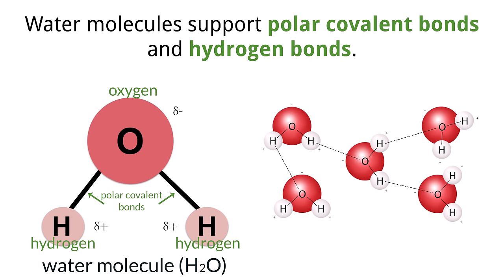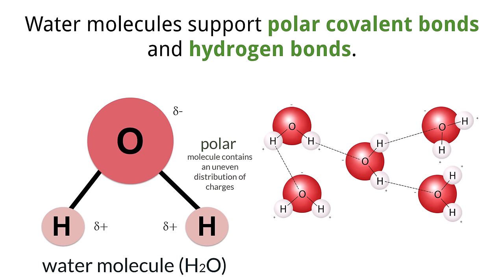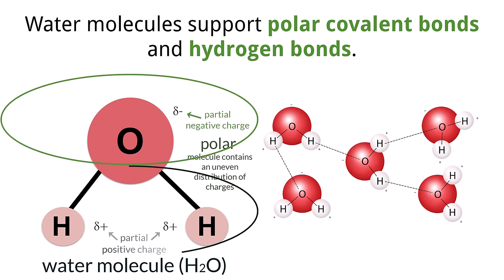One of the most important properties of water that we need to know for biology is that water molecules are polar, which is a consequence of their asymmetrical structure and polar covalent bonds. This means that there is an unequal distribution of charges throughout the molecule, causing one side of the water molecule to be partially negative and the other side to be partially positive.